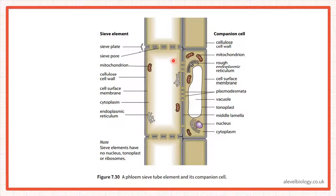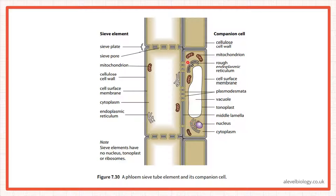In sieve elements, there is no nucleus, no vacuole, no tonoplast, and no ribosomes. Since there's no nucleus, no protein synthesis takes place and there's no need for ribosomes either. But the companion cell is a complete cell — it has all the features, including a lot of mitochondria. There is a reason for this: translocation is done through active transport as well, so we need ATP. You can also see endoplasmic reticulum, nucleus, and vacuole in companion cells.